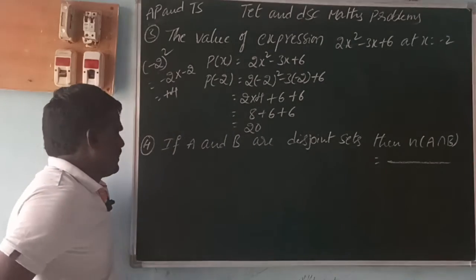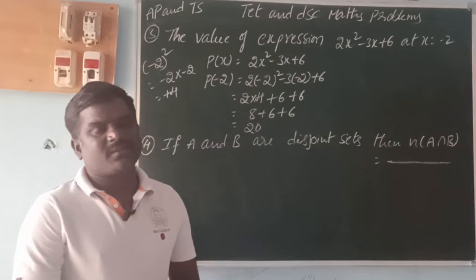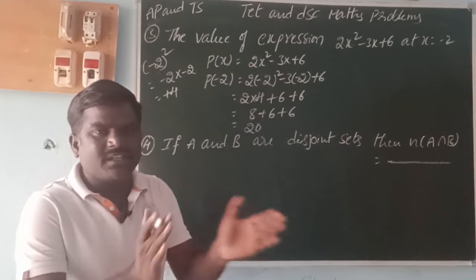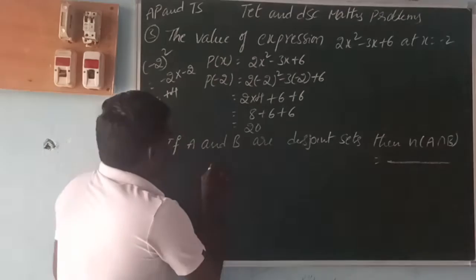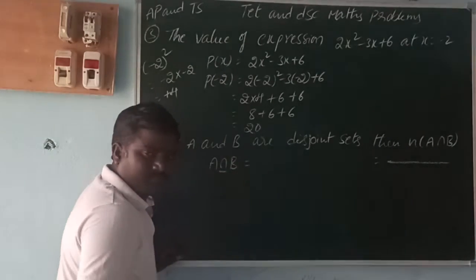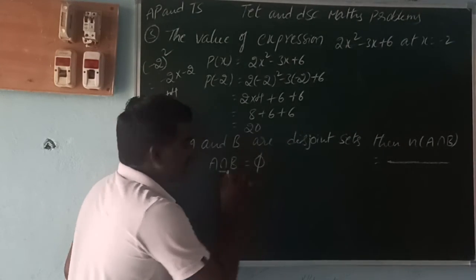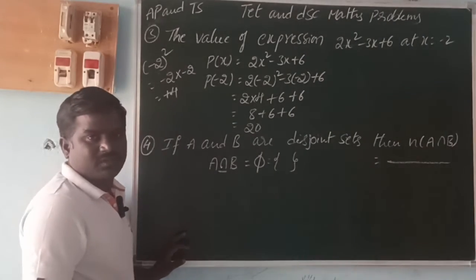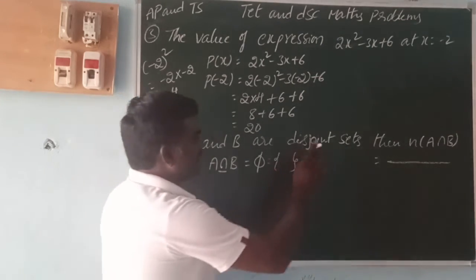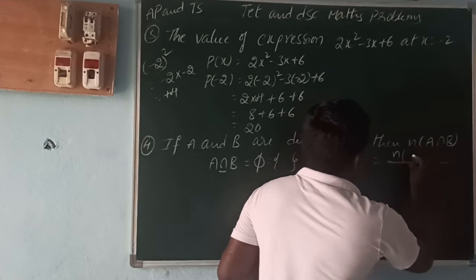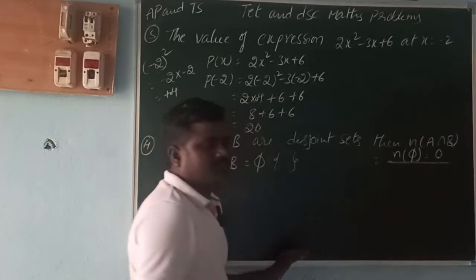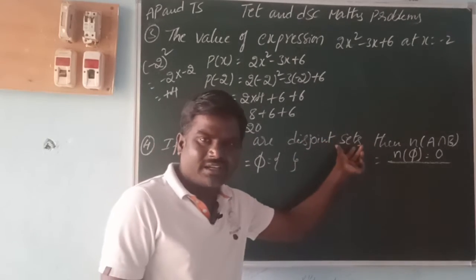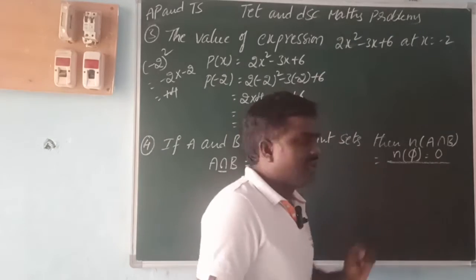Next: if A and B are disjoint sets, then n of A intersection B is what? Disjoint sets means vimukta samuchayalu — there are no common elements between A and B. So A intersection B gives an empty set phi. Therefore n of A intersection B equals 0.